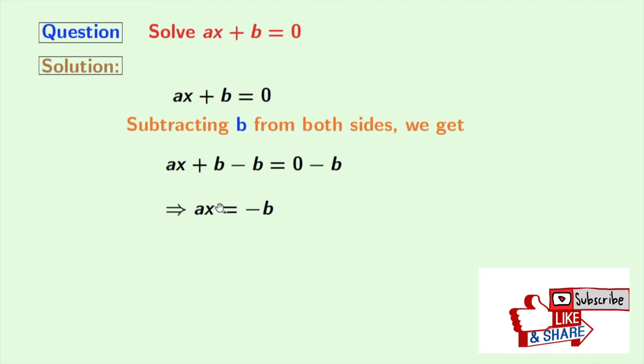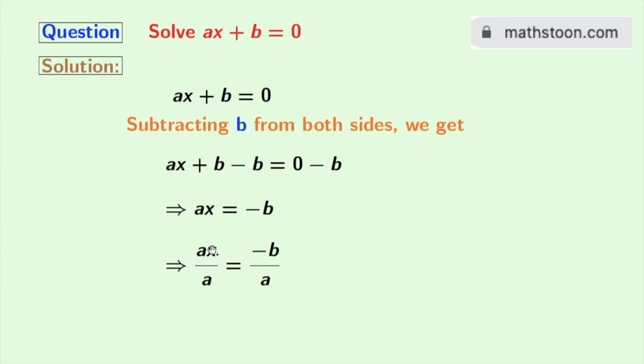Now as the coefficient of x is a, we will divide both sides by a. Doing so, we get ax by a is equal to minus b by a.